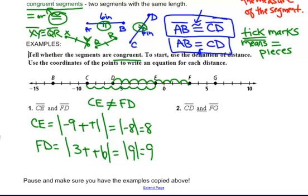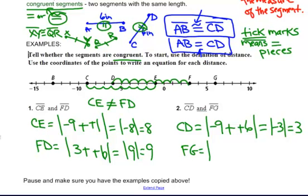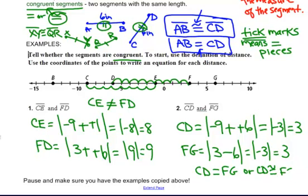Now, let's check CD and FG. CD is equal to C is at negative 9, take away D which is at negative 6. Two negatives make a positive. Absolute value of negative 3 equals 3. FG, F is at the point 3, subtract G which is at the point 6. Absolute value of negative 3 equals 3. These are equal. So I know that CD does equal FG or CD is congruent to FG. Means the same thing.